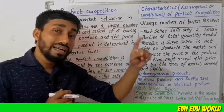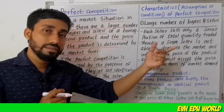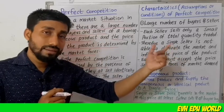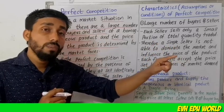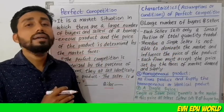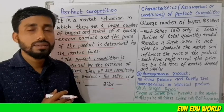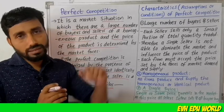In perfect competition, there are a large number of buyers and sellers. They are selling homogeneous products, and they are price takers, not makers.